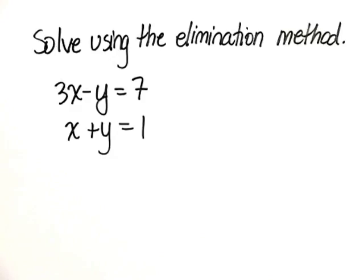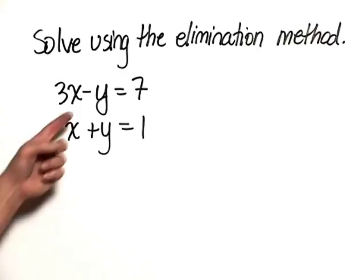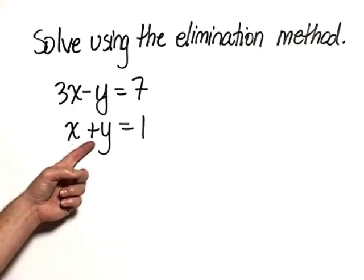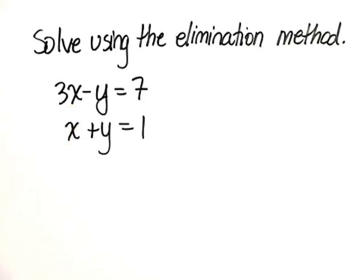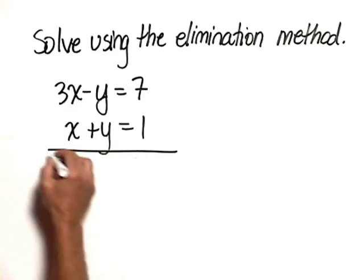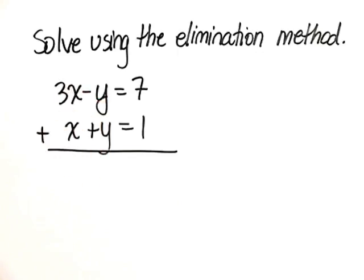Now, when you use the elimination method, you look to see if the given equations have the same variable with opposite coefficient, which we can see that the y variable does. Negative 1, positive 1. In that case, we simply add the two equations together.